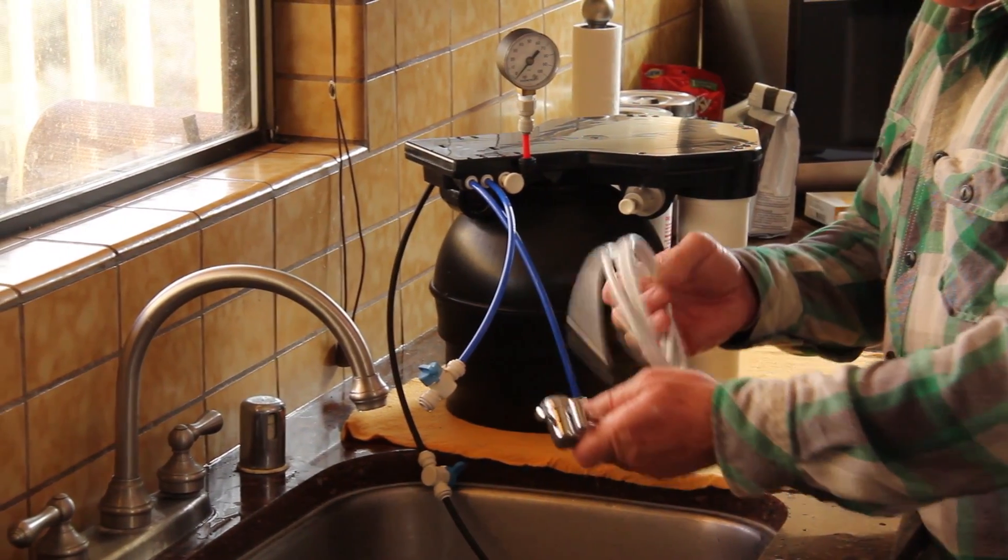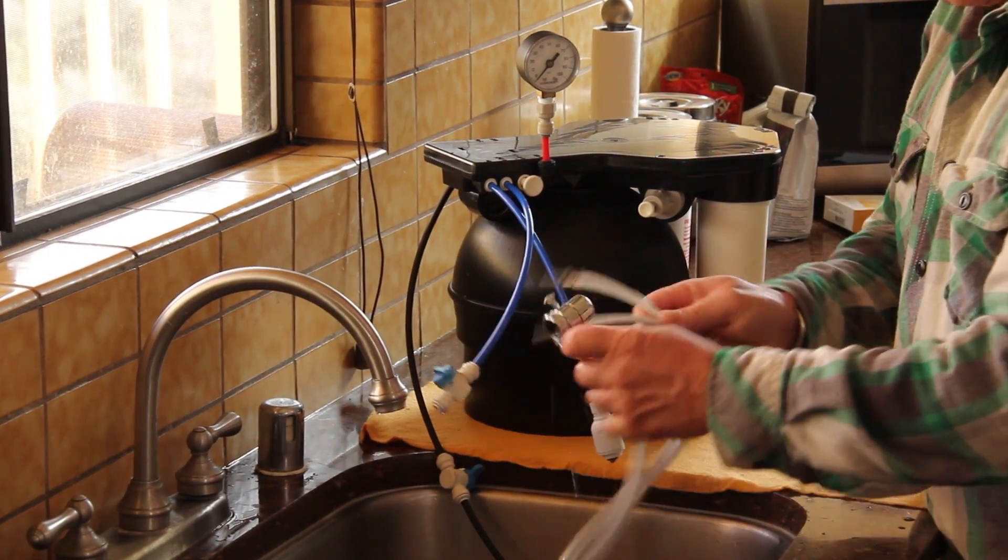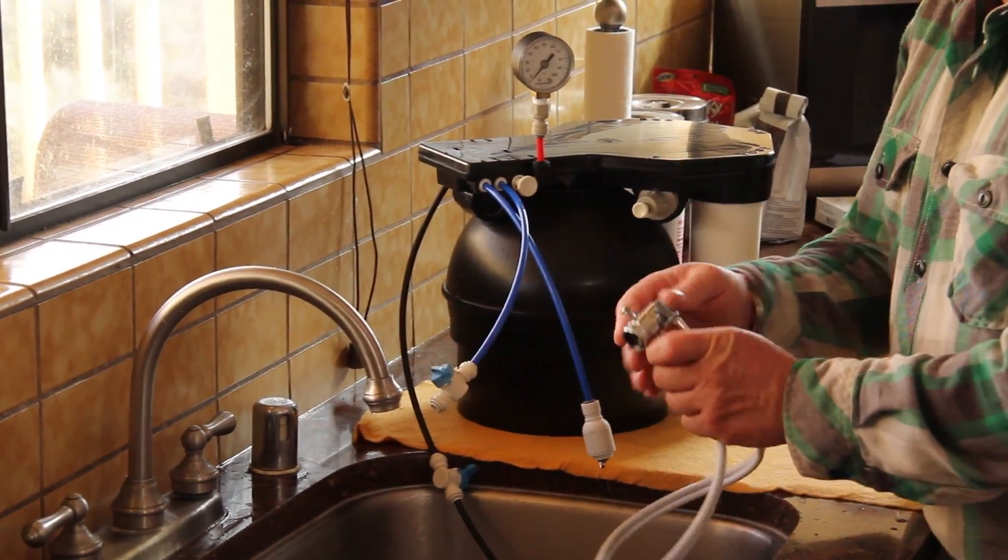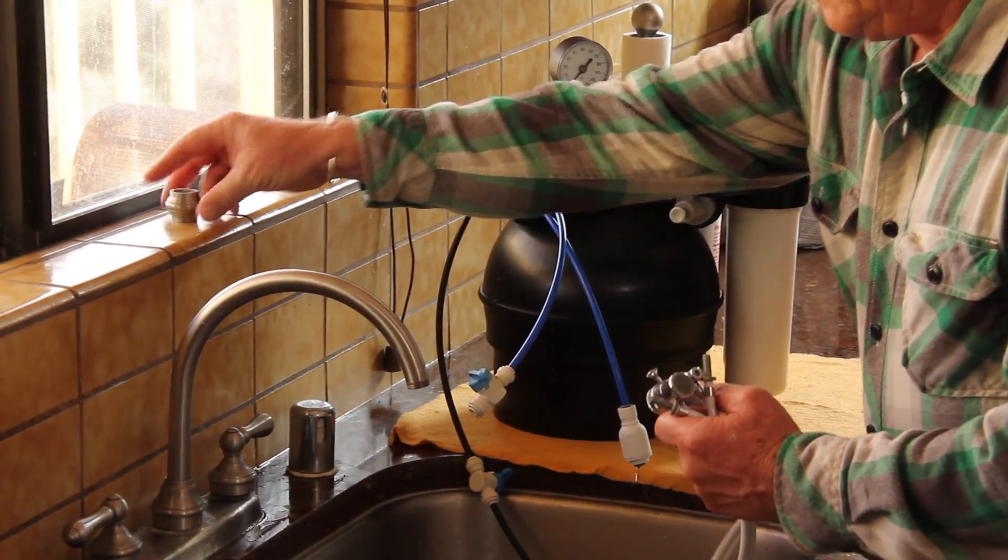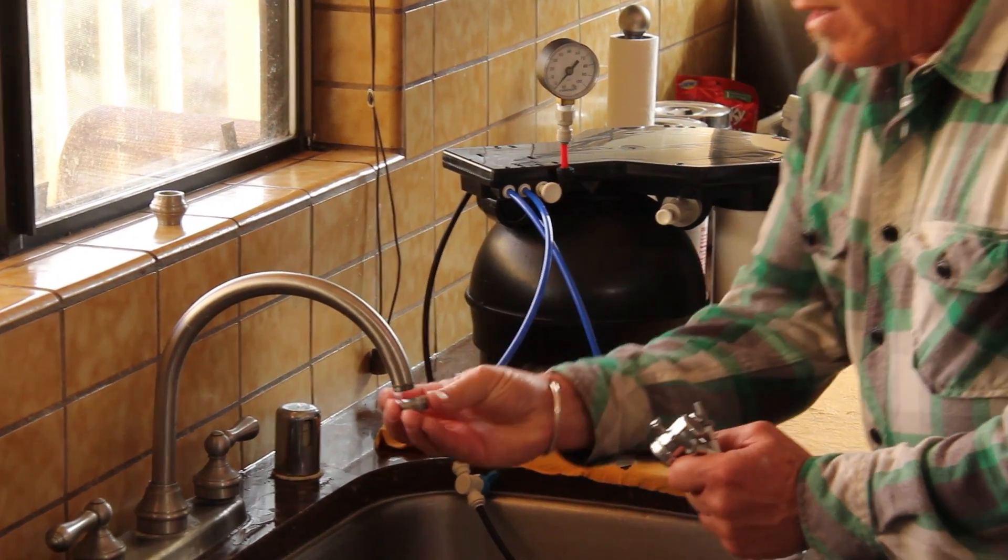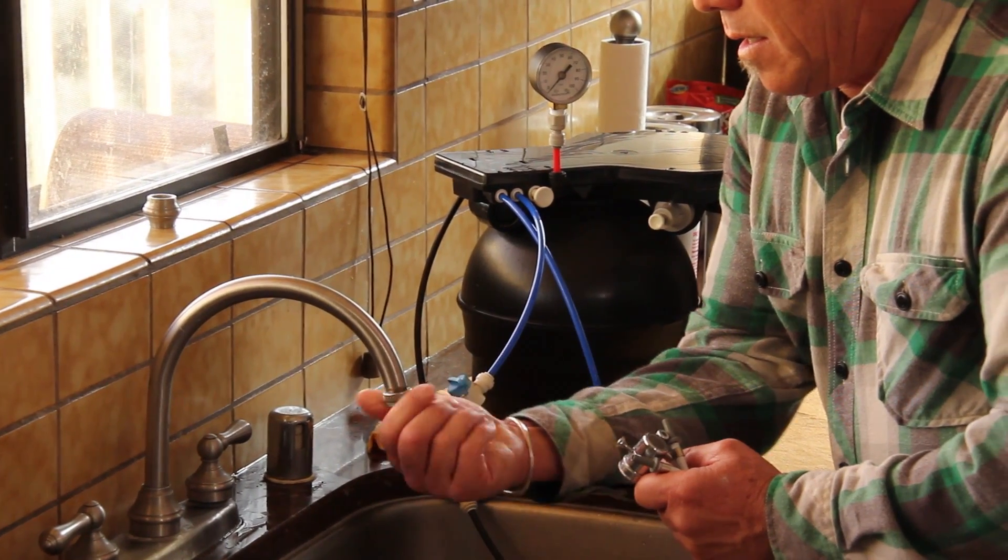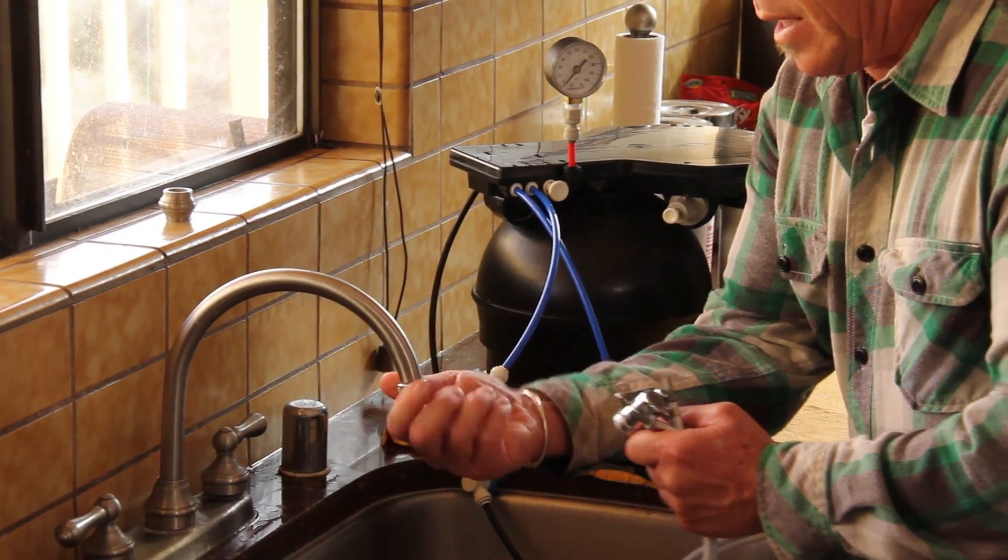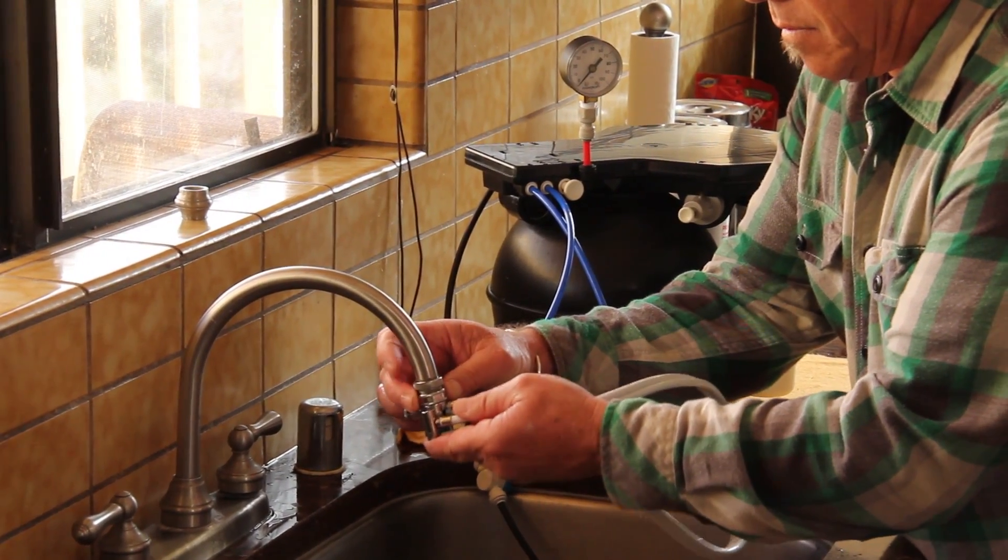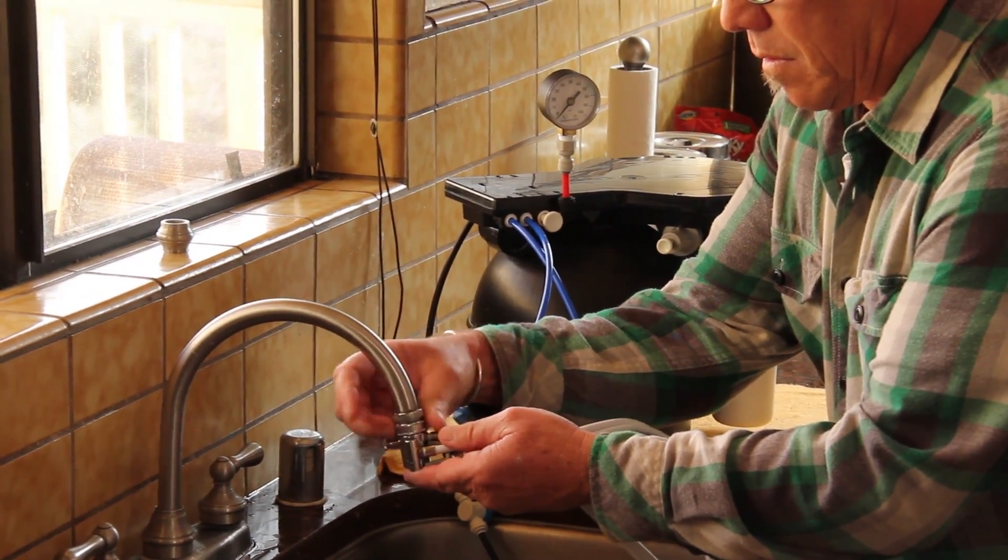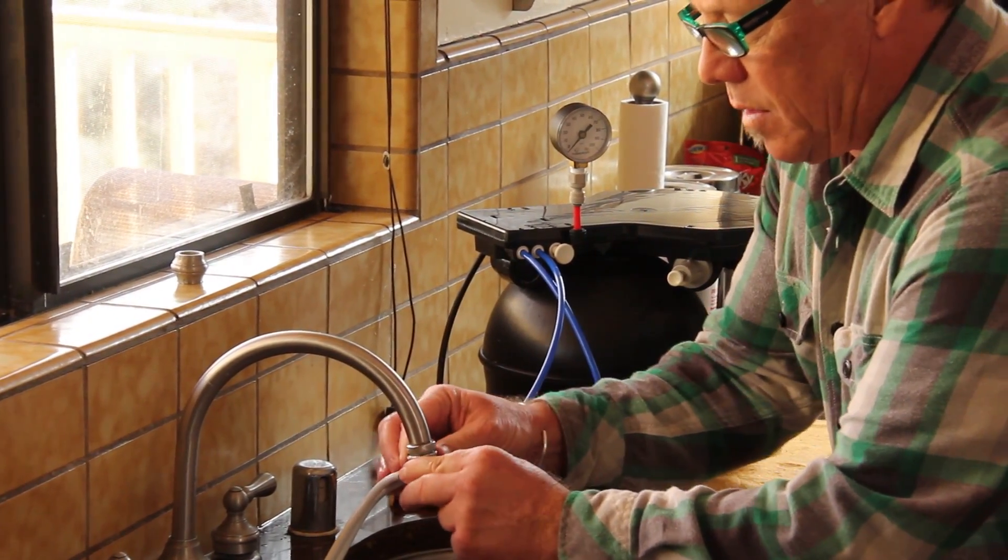I'm using just a traditional two-line diverter valve here to where I can attach this off the tip of the faucet. In this case, we've got a perfect scenario where I can remove the aerator, adapt one of the many adapters that come in this particular kit, and I'm going to screw this on and got it all nice and tight.